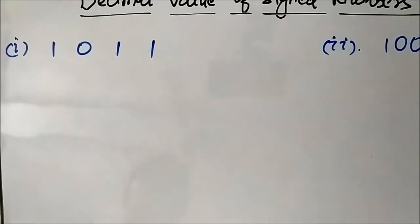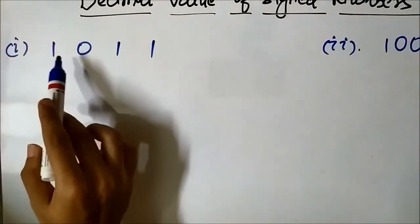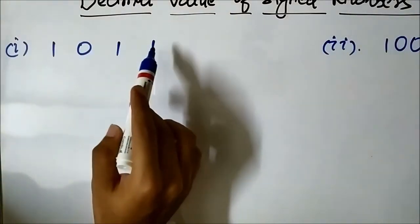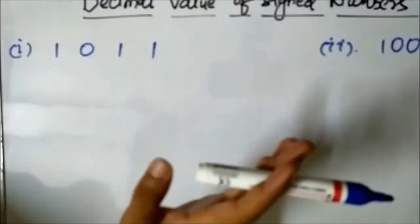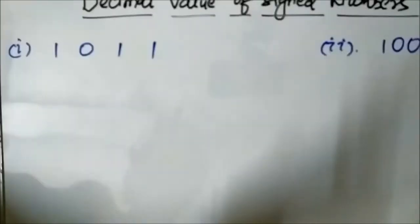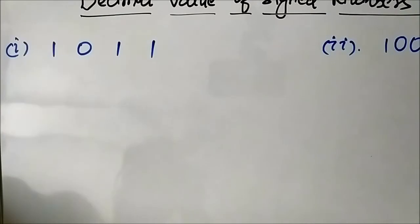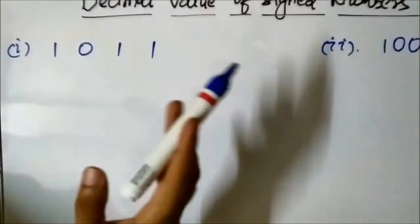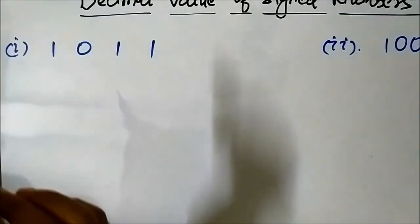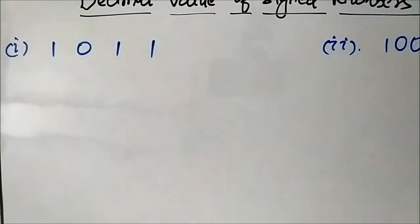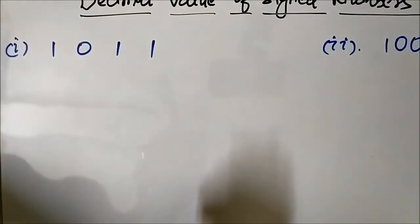Suppose we have been given the number 1011, and it has been mentioned in the question that it is represented using sign magnitude system in 4-bit format. In order to determine its decimal value, the first step — and the most important — is examination of the sign bit.